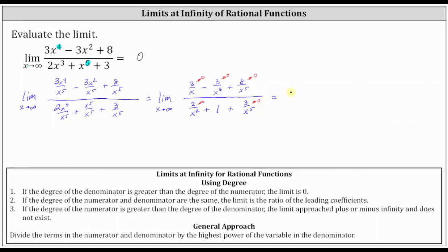Simplifying, we now just have zero over one, or zero divided by one, which is equal to zero. I hope you found this helpful.